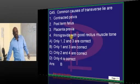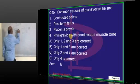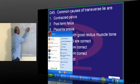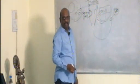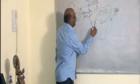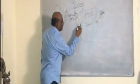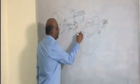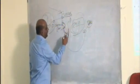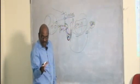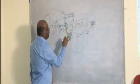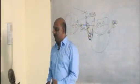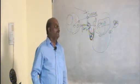In placenta previa, placental implantation is supposed to occur along the fundus, but instead it occurs near the lower segment. So the fetus's head does not have enough space to land there, and therefore the fetus prefers to lie transversely. Placenta previa and contracted pelvis are the predisposing factors for transverse lie.